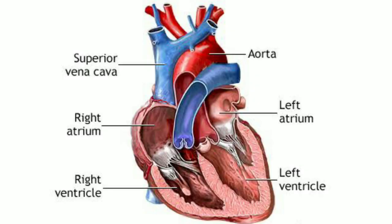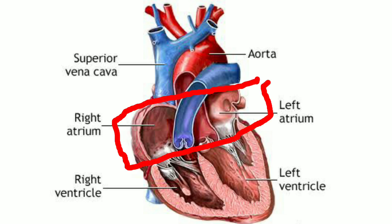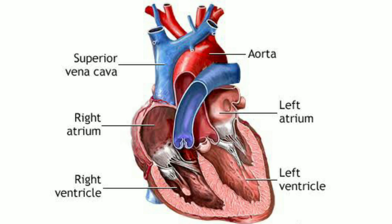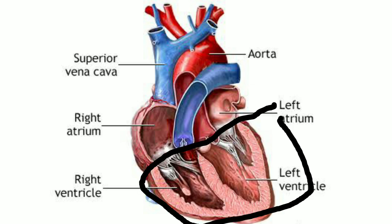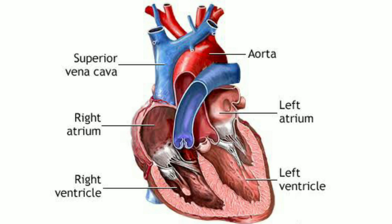The heart has four chambers. Two smaller ones are the atria, located on the upper side. The singular is atrium — right atrium and left atrium. Just below the atria are two ventricles: the right ventricle and left ventricle, which are larger chambers. The atria are separated from the ventricles by the atrioventricular septum, the atria from each other by the inter-atrial septum, and the ventricles from each other by the interventricular septum.